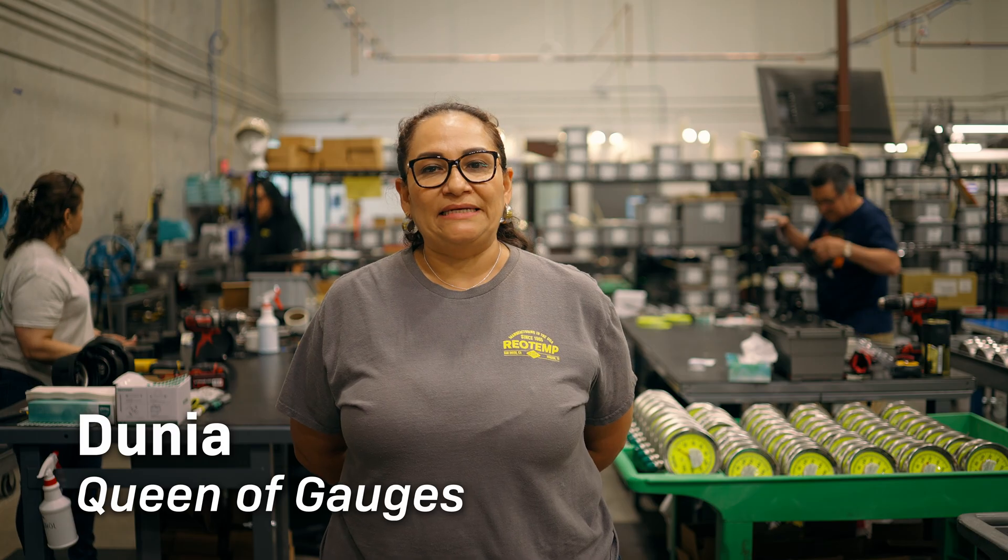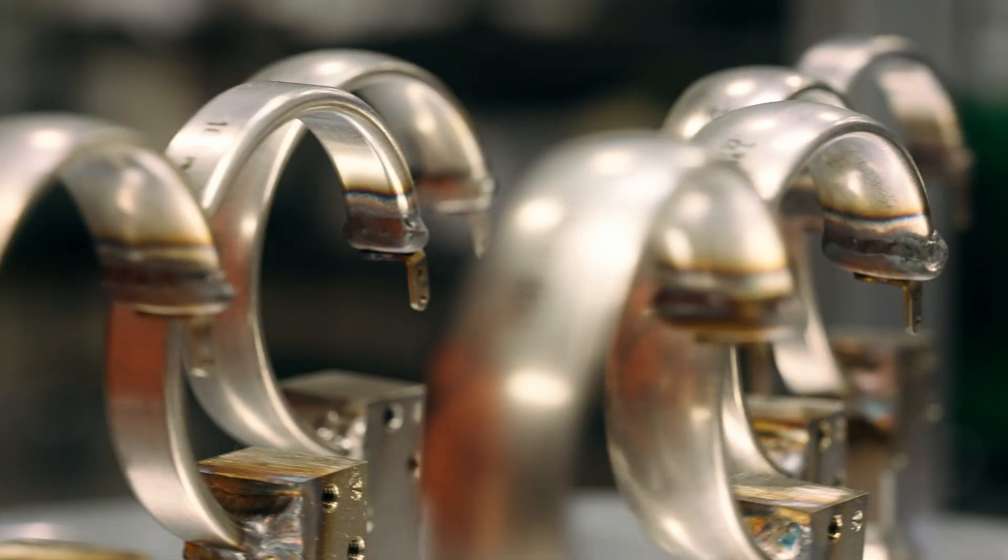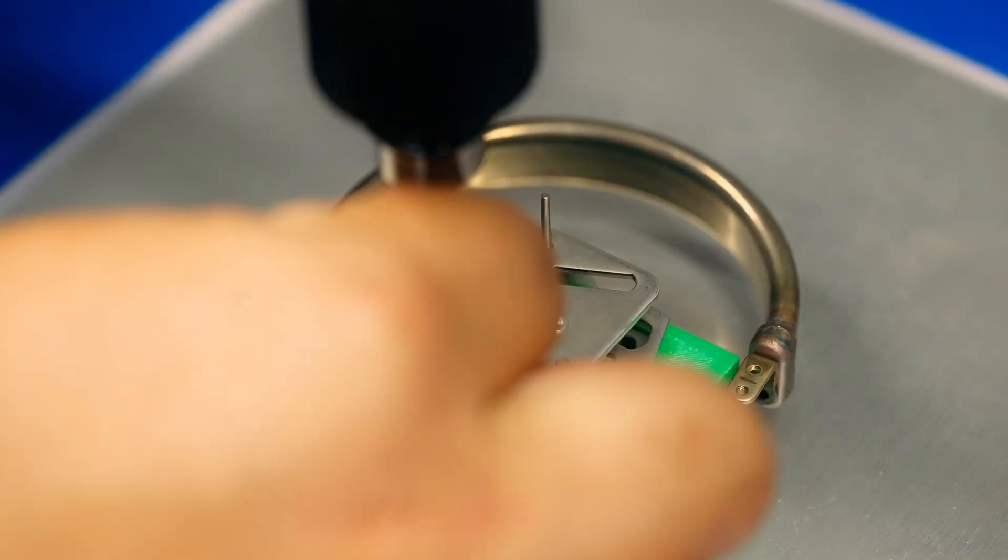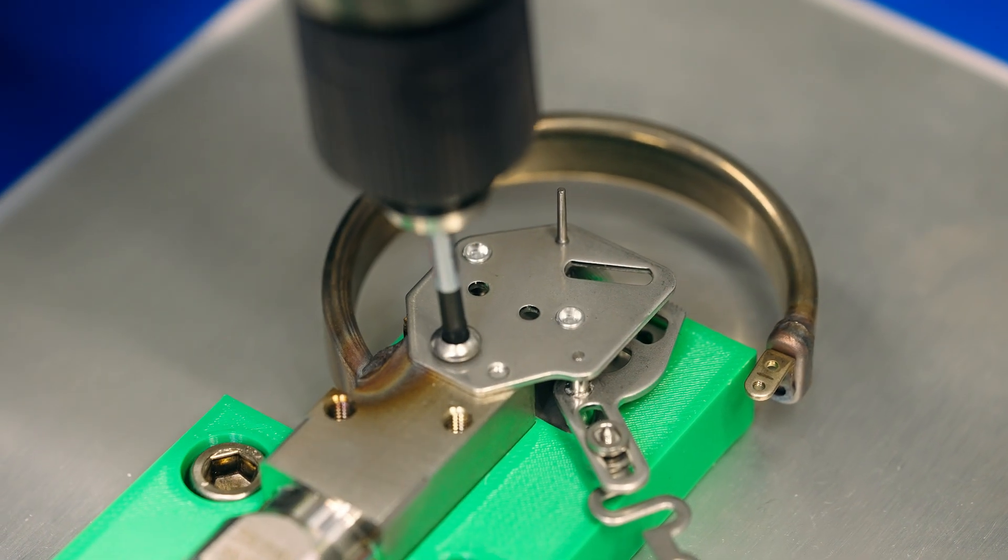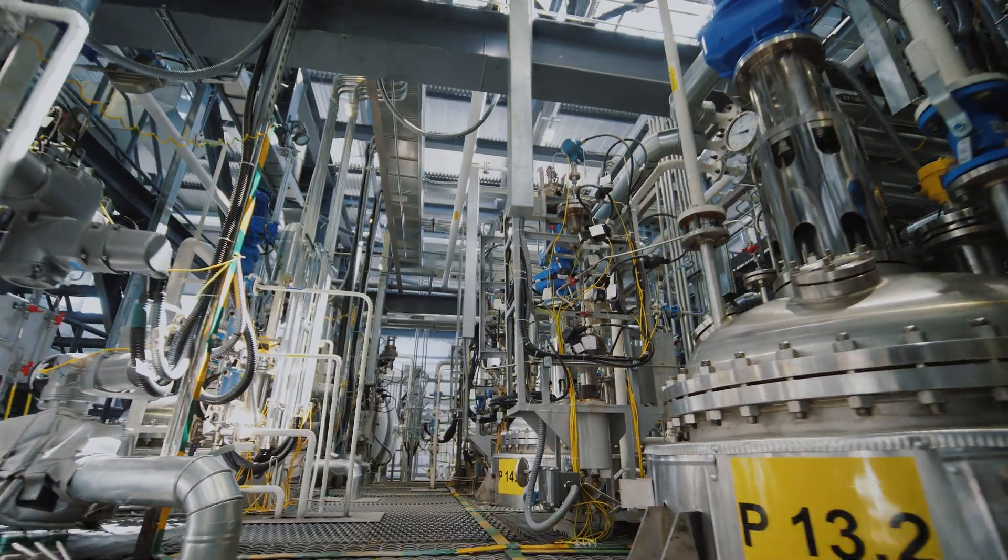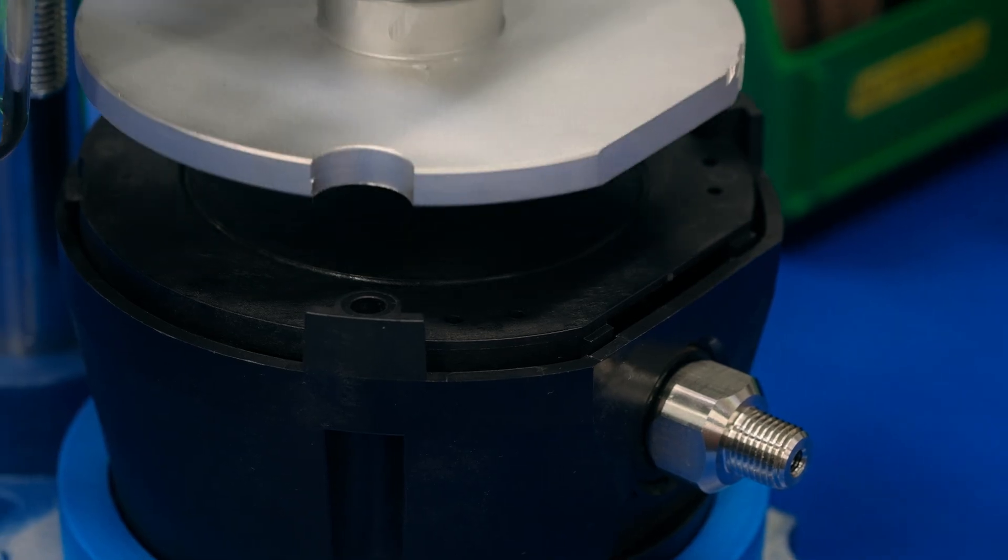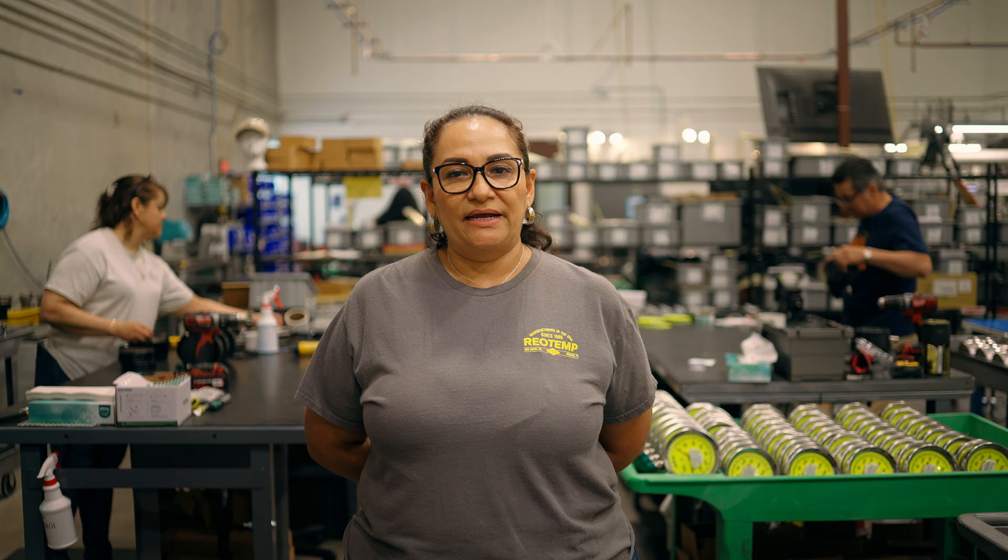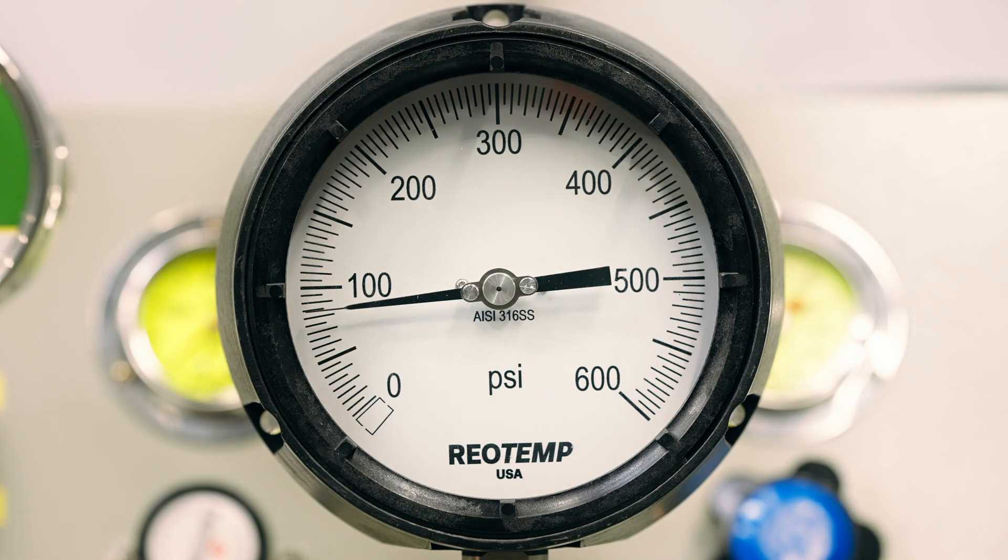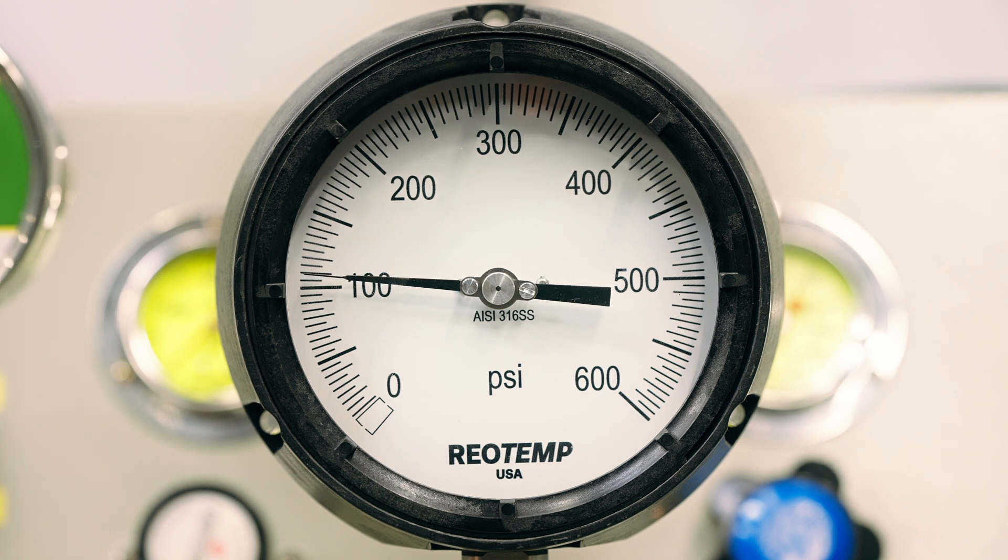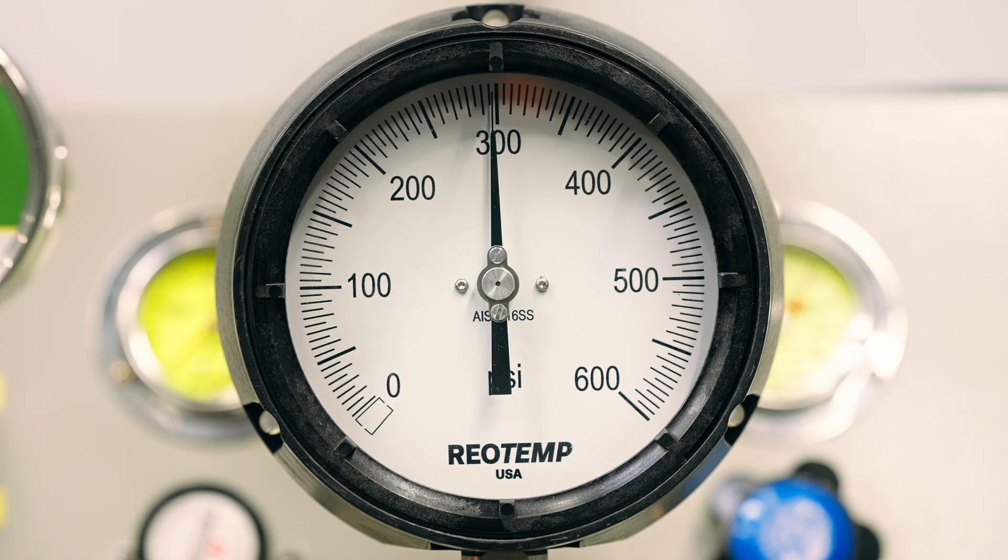Pressure gauge internals can be oil-free, particularly in applications where oil contamination is undesirable. Dry gauges utilize mechanisms that do not require internal lubrication. Oil-free designs ensure compatibility with sensitive processes or environments where oil presence is prohibited.